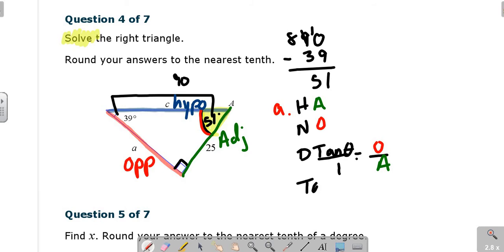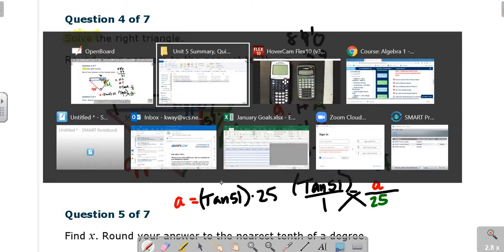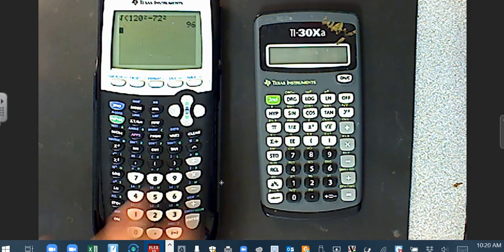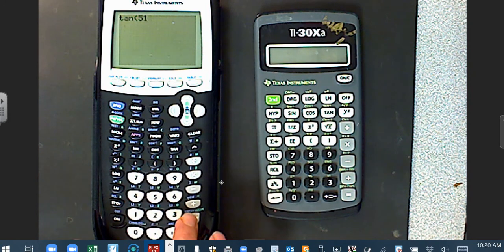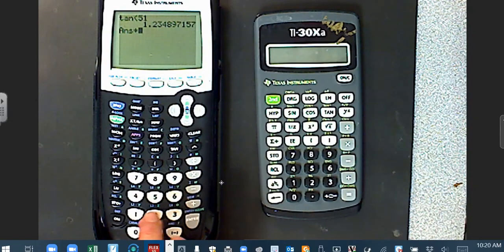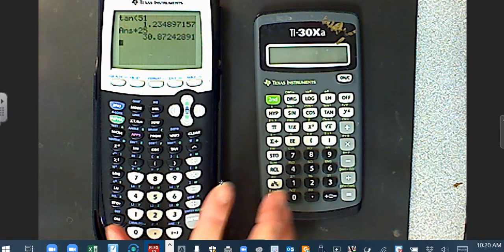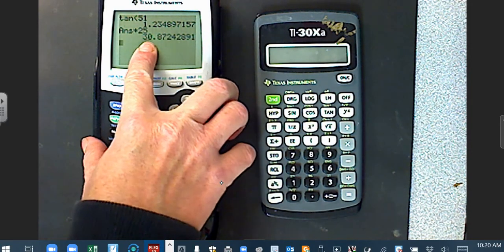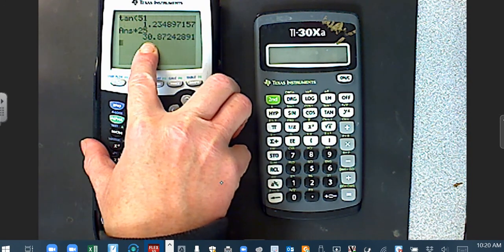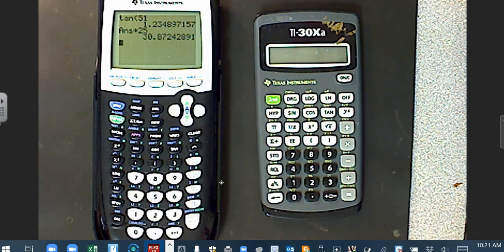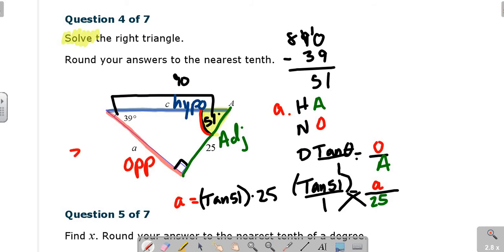So I'm going to solve for A first, side A. I have the adjacent, I need the opposite. So what do you do? You're going to do tangent, because that's O over A. Tangent of theta over 1 equals opposite over adjacent. That's going to be tan 51 equals our opposite, which is our letter A, over adjacent, which is 25. Cross multiply. Your A is going to equal tan 51 times 25. We do tangent of 51, enter, times 25, enter. It's going to be 30.9.